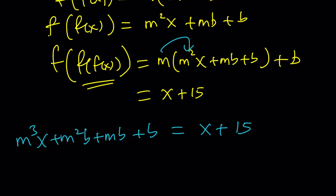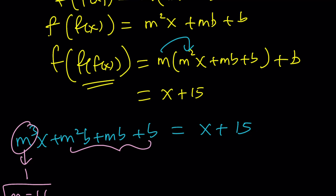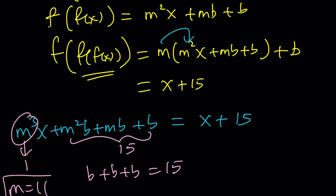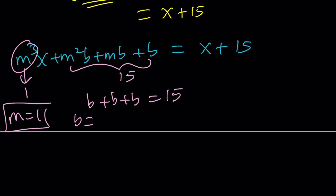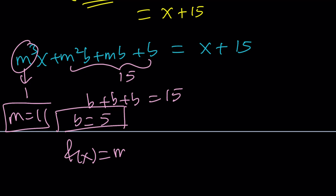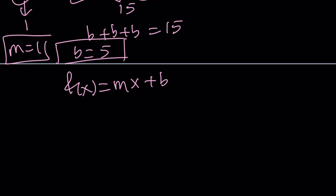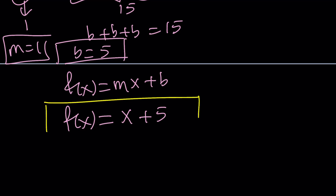From that equation, the coefficient of x gives m³ = 1, so m = 1. Then the constant terms give b + b + b = 15, meaning 3b = 15, so b = 5. Therefore f(x) = 1·x + 5 = x + 5 — but again, this is under the assumption that f is linear.